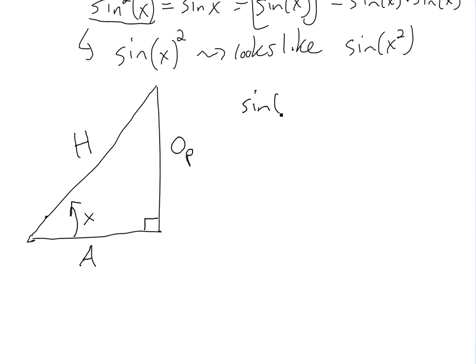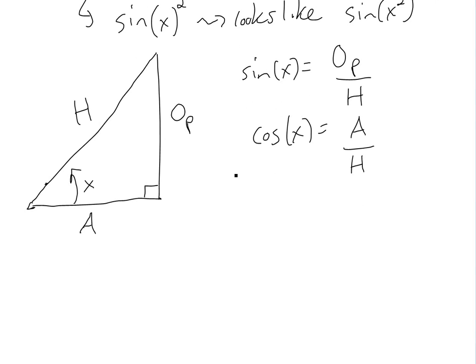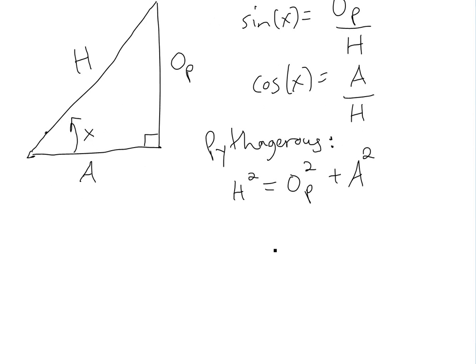So we know that sin(x) is just equal to, by definition, op over h, and cos(x) is equal to adjacent over hypotenuse. And then we also have to apply Pythagoras - this is for the proof. Pythagoras: we know from my other video that basically h² = op² + a², or c² = a² + b². Okay, so we have that.